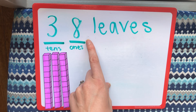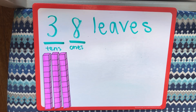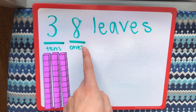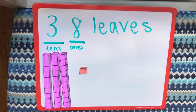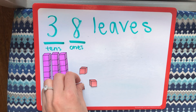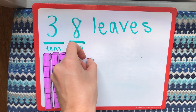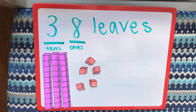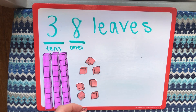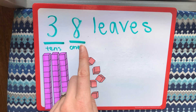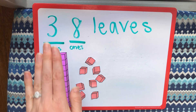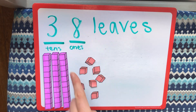Next I need 8 ones. That's not going to be a full long because it's not a group of 10 — it's just in the ones place. So I'm gonna use unit blocks: 1, 2, 3, 4, 5, 6, 7, 8. I can use my base 10 blocks to represent 38 with 3 tens — 3 longs — and 8 ones — 8 units.